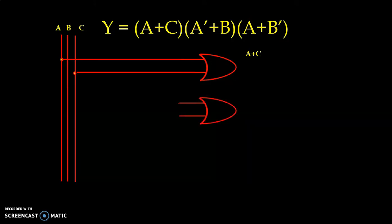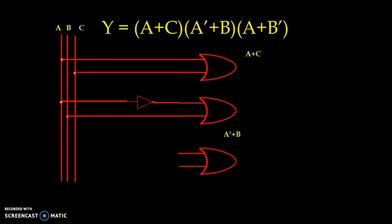Then for the second sum term, we take B directly. For the third sum term, again we use A directly. And for the B bar, we use inverter. And we take A plus B bar.